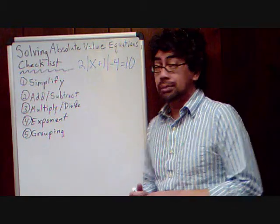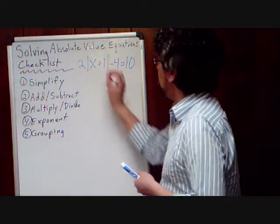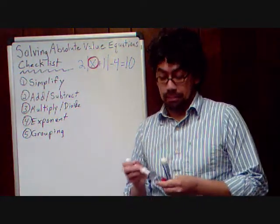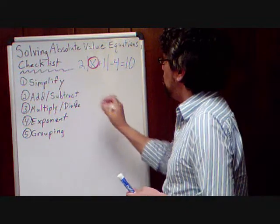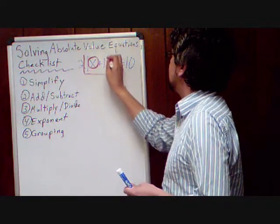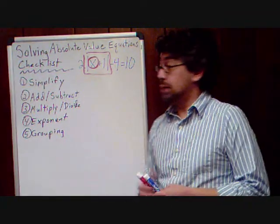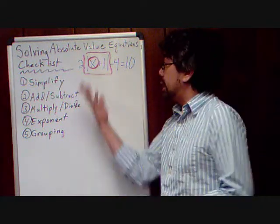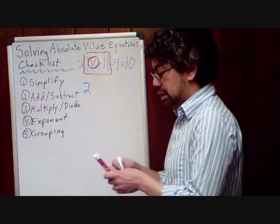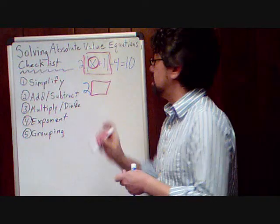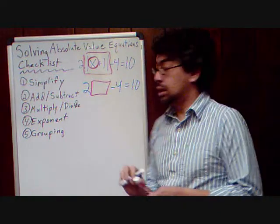So we've got 2 times the absolute value of x plus 1, minus 4 equals 10. Remember our whole goal is to isolate that x. But we'll notice that the x is inside an absolute value, so what I want you to do is actually just block that off, because we need to save that till the end with our grouping step — we can't actually multiply 2 times that absolute value. So past this point, think of it as 2 times something minus 4 equals 10, and just ignore that for now.